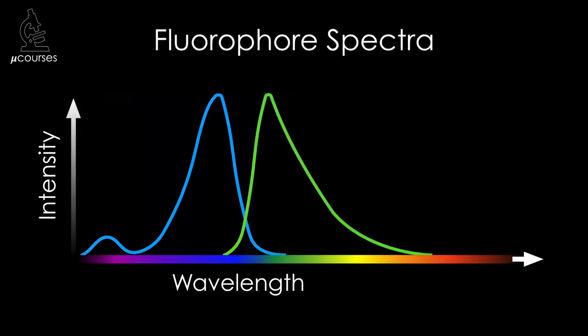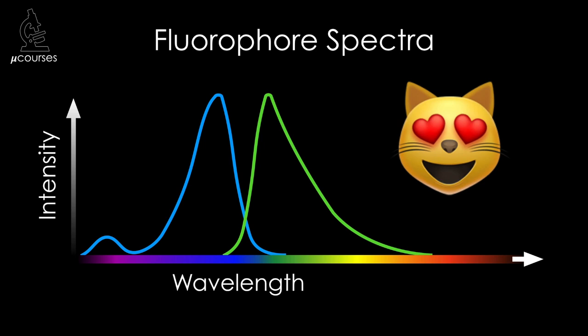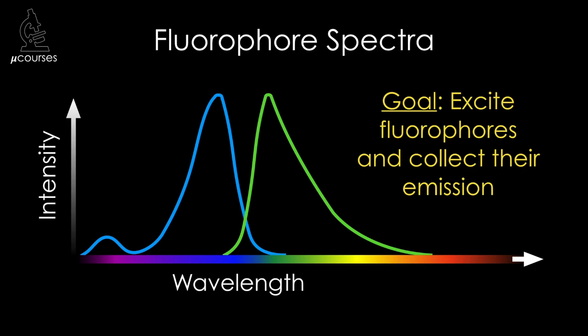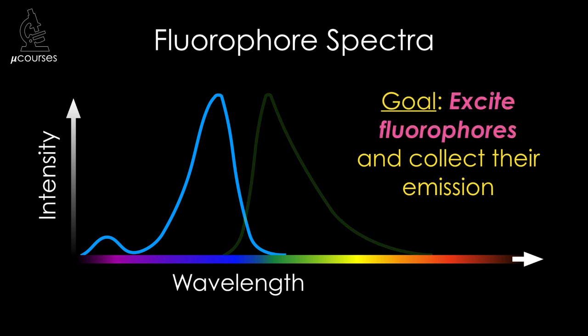In this microcourse, I will use this spectra as an example. Fluorophore spectra are critical tools for choosing the best filters for imaging. Let's begin by thinking about what we need from filters in order to image the fluorescence reaction. Our goal is to excite the fluorophores in our sample and to collect their emission. Let's first consider the excitation of fluorophores.